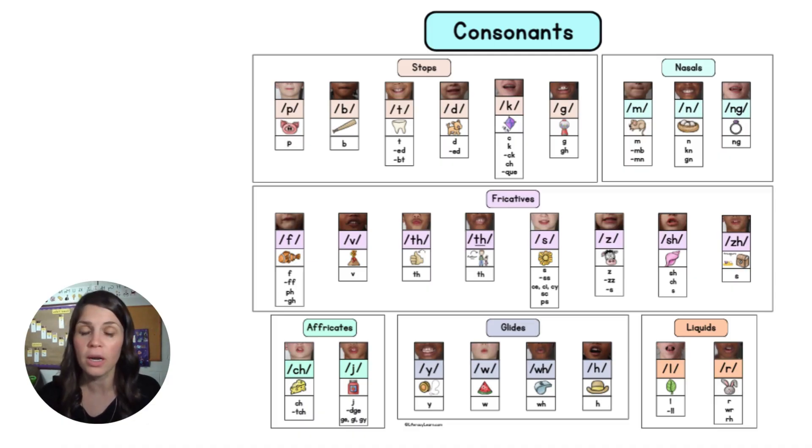Those are the English sounds, both consonants and vowels. Most experts agree that there are between 42 and 44 total speech sounds in English, and all of our words are composed of these speech sounds.